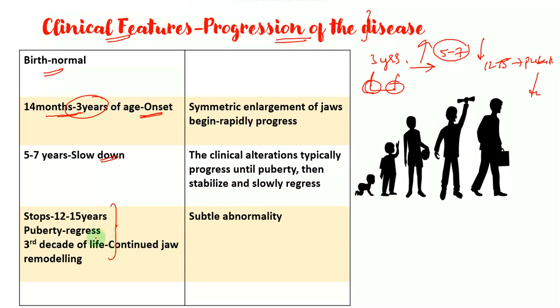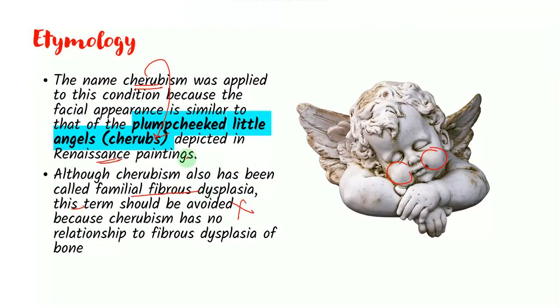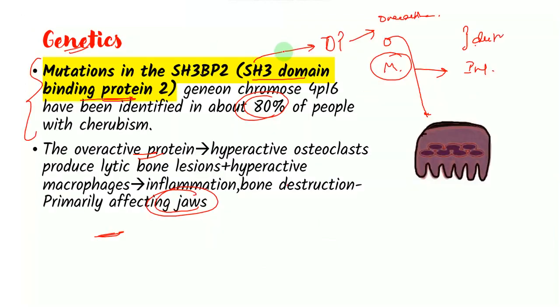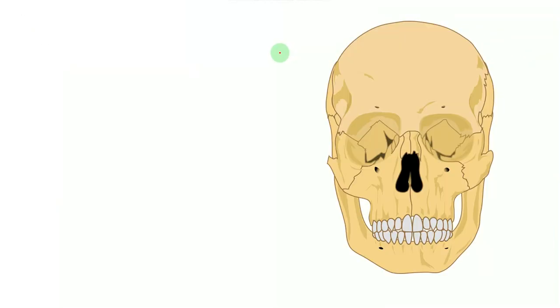So up to the third decade of life, there is continued remodeling of the jaws and most of the people that you would see in that age group, they appear to be normal. Another important thing here is that Cherubism is a very rare disease. It's very rarely seen. It was first described in 1923 only. So not many cases are also to study.